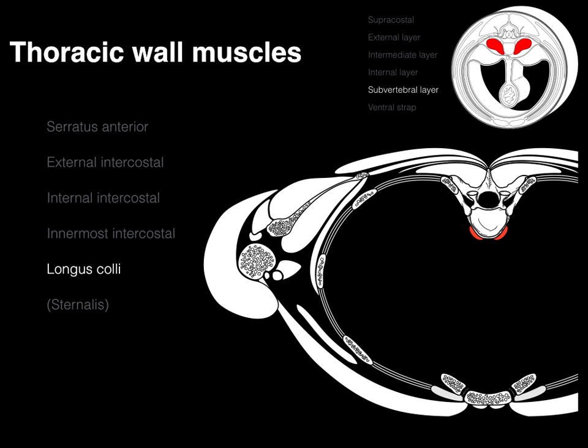With regards to the subvertebral layer, in the thoracic region much of that is not functional because we don't need it in humans. But you have the longus colli from the neck that comes down into the upper thorax — we'll cover that in the neck unit. And then the sternalis, seen in red at the very front, is a vestigial muscle you rarely find in humans, but when you see it, it's not a surprise because its pattern is there.